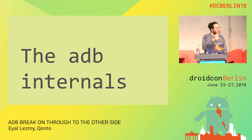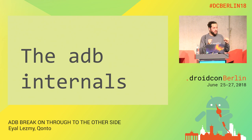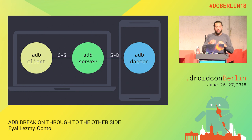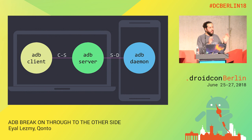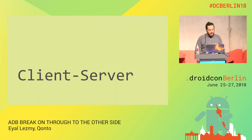You can see some gems hidden in ADB — pretty surprising, but still boring. Let's do more boring things: the ADB internals. We have our big picture: the ADB client, the ADB server, the ADB daemon. All these parts talk to each other using a specific protocol. There are two named protocols: CS (client-server) and SD (server-daemon).